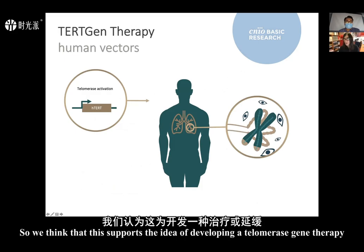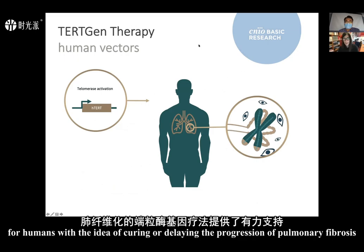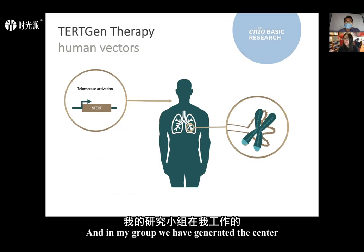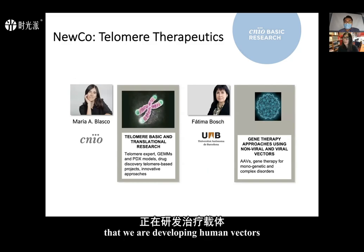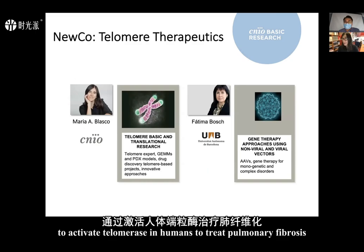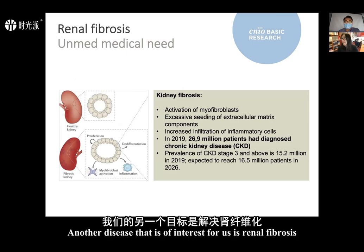This supports the idea of developing a human telomerase gene therapy for curing or delaying the progression of pulmonary fibrosis. At the Spanish National Cancer Center, together with the University of Barcelona, we have generated a new company called Telomer Therapeutics, where we are developing human vectors to activate telomerase in humans to treat pulmonary fibrosis.